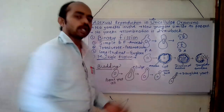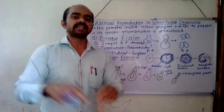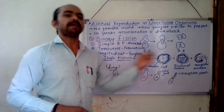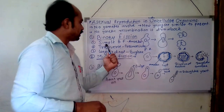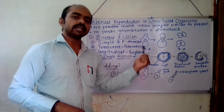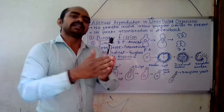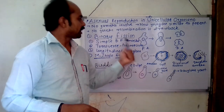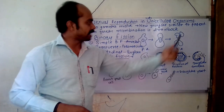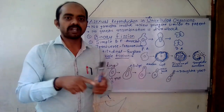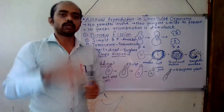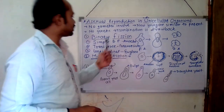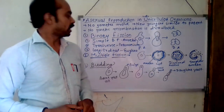We will take the example of amoeba. We all know that amoeba is an irregular shaped organism. In simple binary fission — the first type — that irregular shaped amoeba divides into any two non-similar parts, and those are known as the daughter amoeba. So this is the simple binary fission of the amoeba.